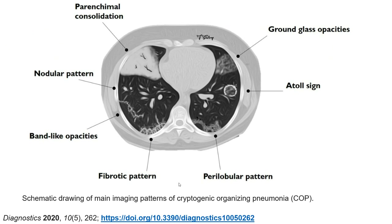This is a schematic drawing of the main imaging patterns of cryptogenic organizing pneumonia. On the right side are examples showing consolidation, nodular pattern, band-like opacity, and fibrotic pattern. On the left side are the global pattern and ground glass opacity.